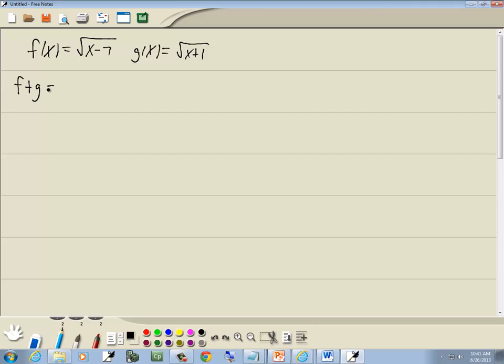First thing, we want to find f plus g. So take our first radical and we'll add our second one. There's really no need to put parentheses in there because they're both separate, just by them being enclosed in a radical. And that's our answer.